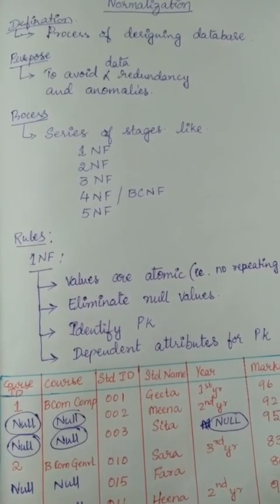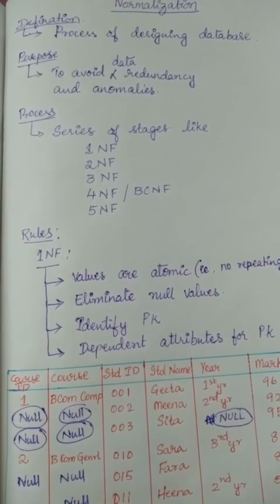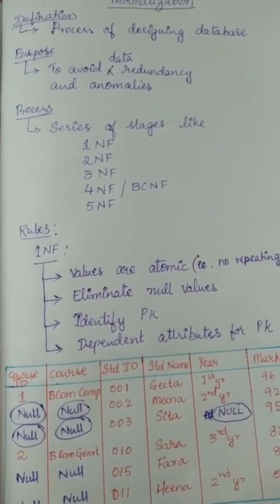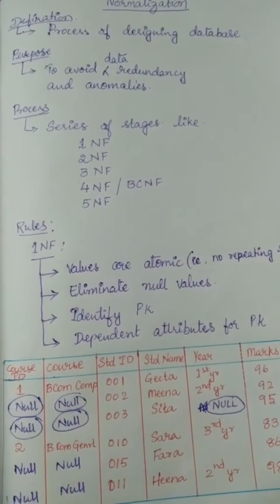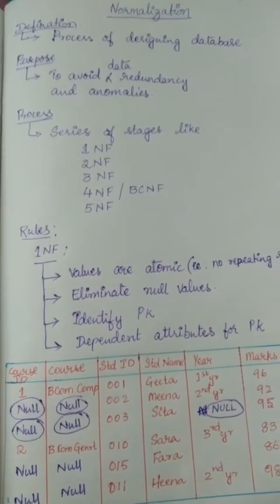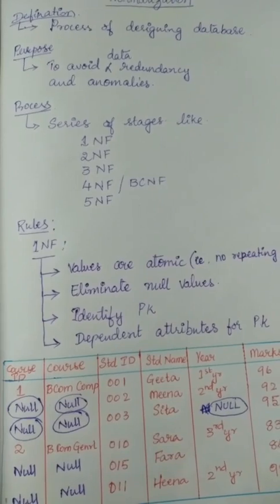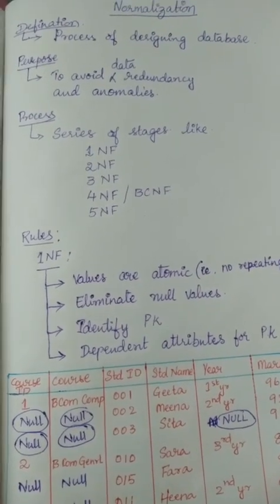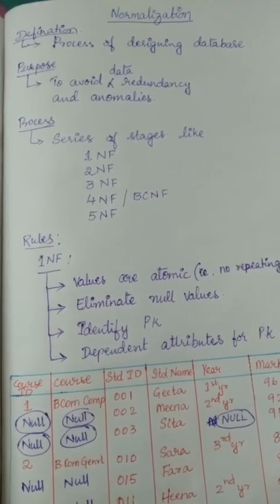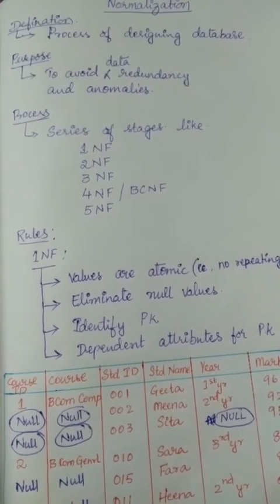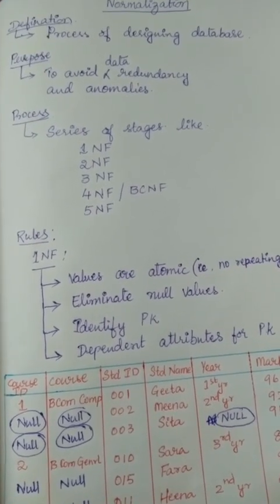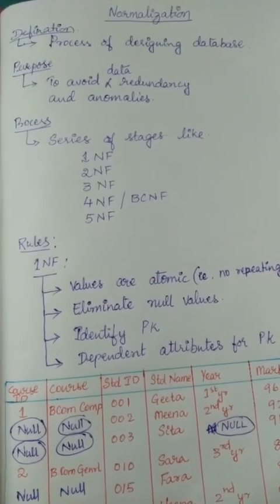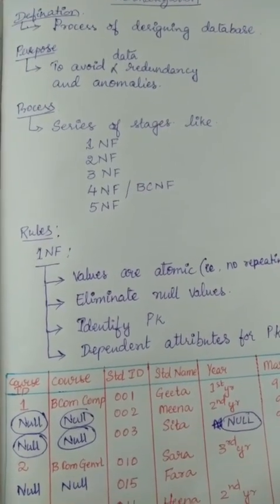We should take care when designing the database itself so that repeated data can be avoided during insertion. Before we start inserting, we have to design the database properly. Designing a database in this way is called normalization, and the purpose of normalization is to avoid data redundancy and anomalies.